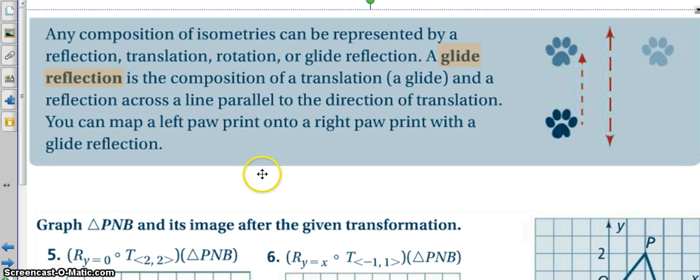So, now we're going to learn about this fancy schmancy glide reflection. So, let's read this. Any composition of isometries can be represented by a reflection, translation, rotation, or glide reflection. So, we can actually make anything happen.